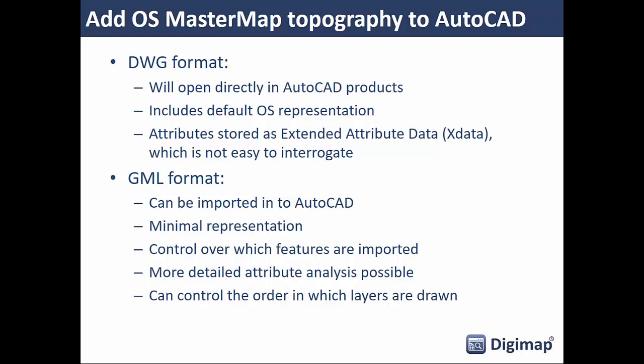The MasterMap data shown in AutoCAD was DWG format downloaded directly from Digimap — no additional processing required; just open it and the default representation is already applied, with attribute data stored as extended attribute data. You can also import OS MasterMap from GML format, which gives you more control over what line work and attributes you import and allows more analysis. That may be more appropriate for advanced users who want greater control.